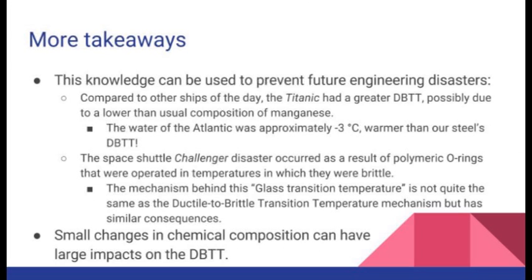New evidence suggests that the steel used to build the Titanic had a shortage of manganese, which resulted in a high DBTT, meaning that the ship could have been in its brittle failure mode when it contacted the iceberg. This is important because if the steel had been in its ductile regime, more energy could have been absorbed before cracking of the hull occurred, potentially saving the lives of those on board. A similar effect was seen in the polymeric O-rings of the Space Shuttle Challenger — these O-rings required flexibility but were operated at a temperature where they were rigid, leading to failure.